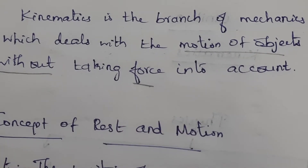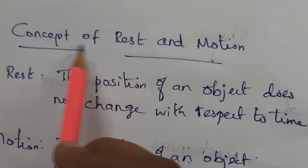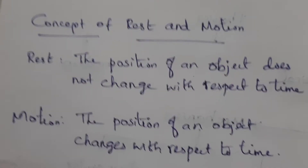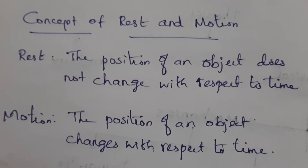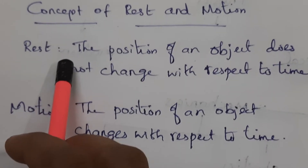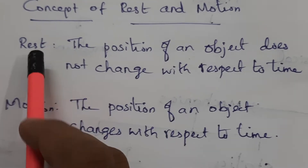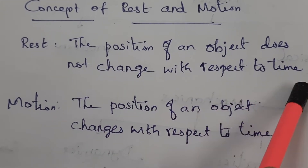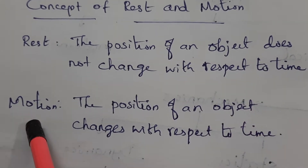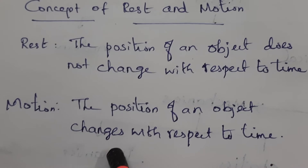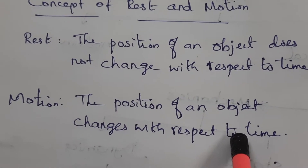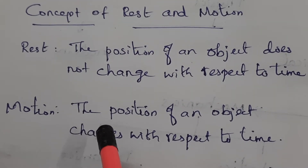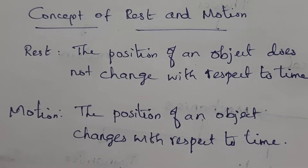Next, the concept of rest and motion. What is rest and what is motion? Rest means the position of an object does not change with respect to time. Motion means the position of an object changes with respect to time. In higher classes, you need to understand the next level of rest and motion.